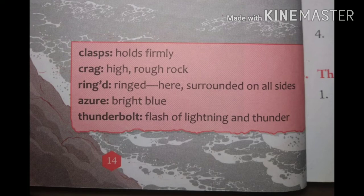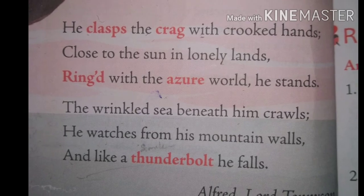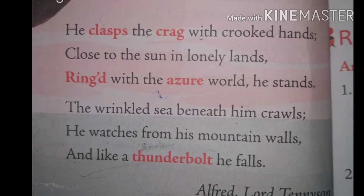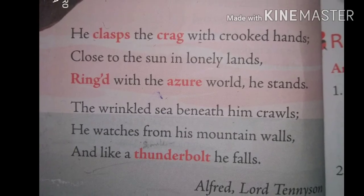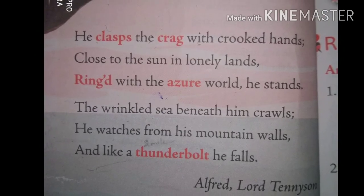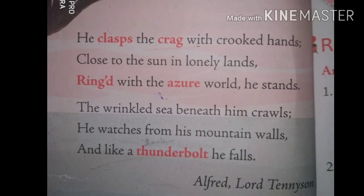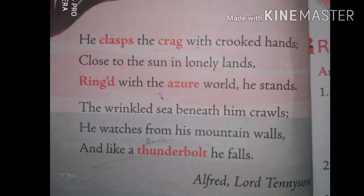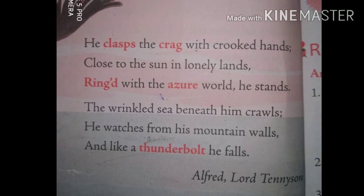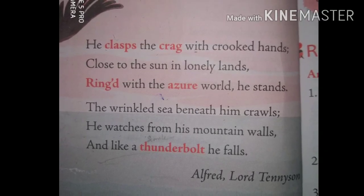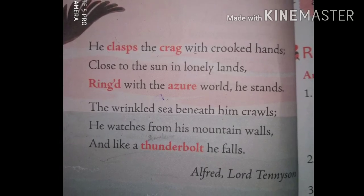In this poem, some poetical devices are used by Alfred Lord Tennyson. Here we can see alliteration. If you check the second line, 'lonely lands,' we can see two words closely arranged with the same sound. Both words — lonely and lands — start with the L sound. This six-line poem has a definite poetical structure as well.